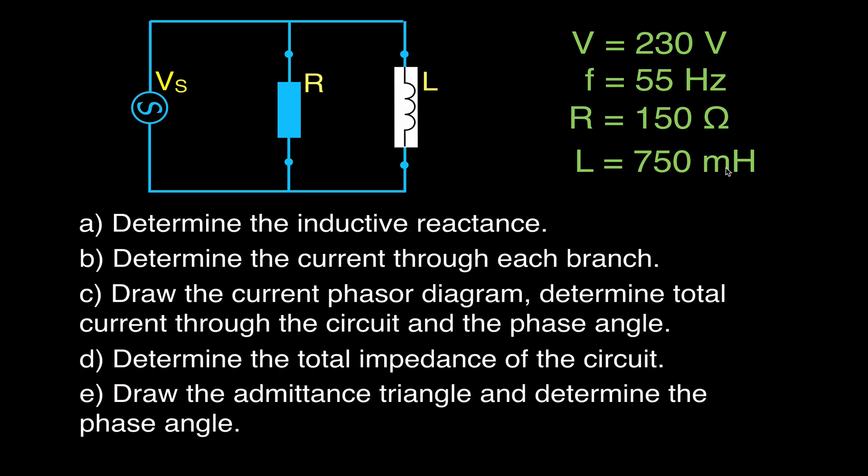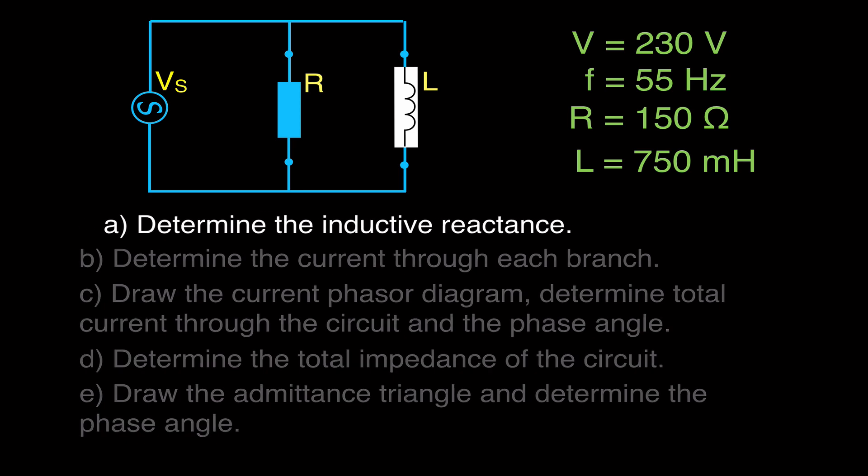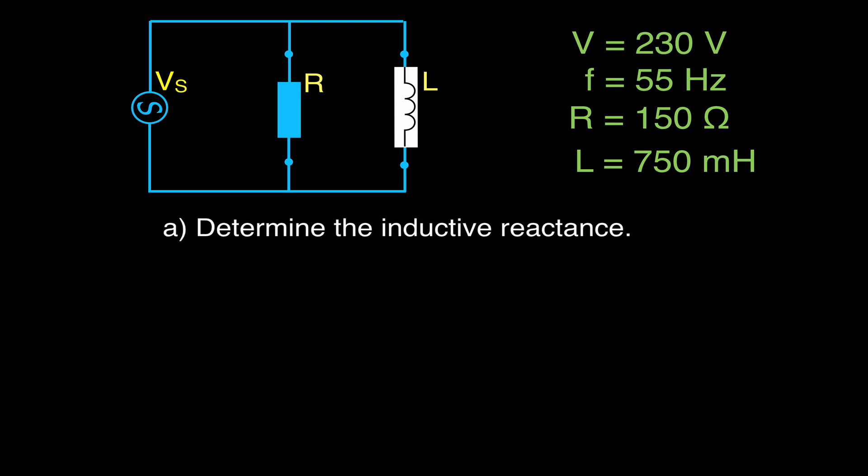We'll find the inductive reactance, the current through each branch, draw the current phasor diagram, find the total current and the phase angle. We're going to get the impedance of the circuit and draw the admittance triangle, get the admittance and determine the phase angle that way. Maybe we'll do a little more than just that, but those are the main points we're going to cover.